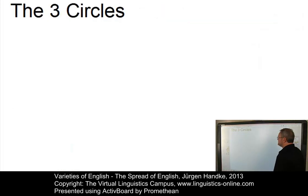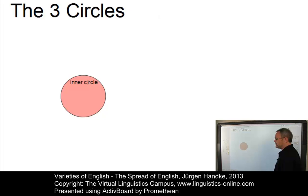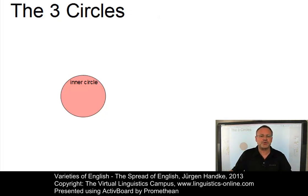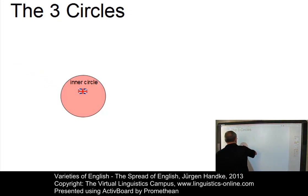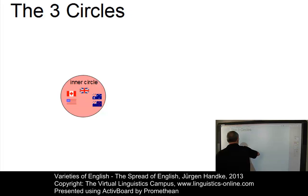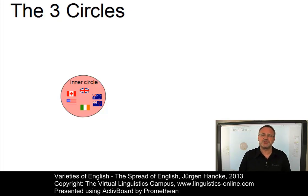According to the Indian linguist Braj Kachru, the spread of English around the world can be defined in terms of three concentric circles. The inner circle refers to the traditional, historical, and sociolinguistic origins of English where it is used as a first or native language. The main countries are Great Britain, North America with Canada and the United States, Australia and New Zealand, and often forgotten, Ireland. These countries form the inner circle with about 400 million speakers, almost 70% of which are from the United States.